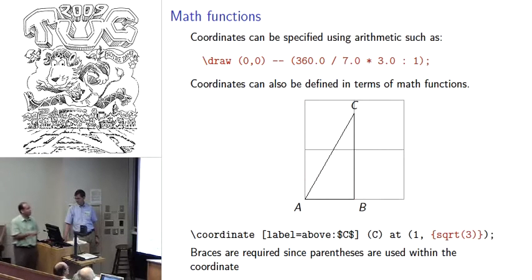A simple little example. Coordinates could also use our math functions. Here we're just going to define this length using the square root of three. Since we have parentheses inside here, we have to put the curly braces around it so that it understands what we're talking about is mathematics and not trying to refer to another coordinate that happens to be named three.